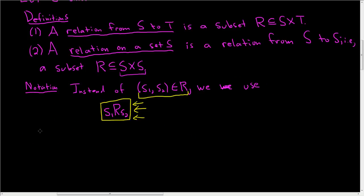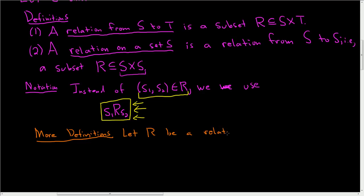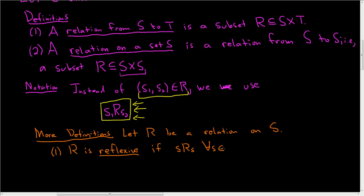A couple more definitions. We'll look at some examples soon, once we're done. They're not hard, and it's really important to know them. In the definitions that follow, let R be a relation on S. The first definition is reflexivity: R is reflexive if s is related to s for all s in S.